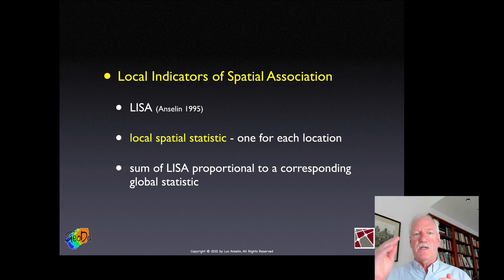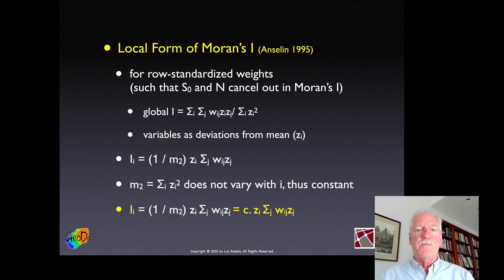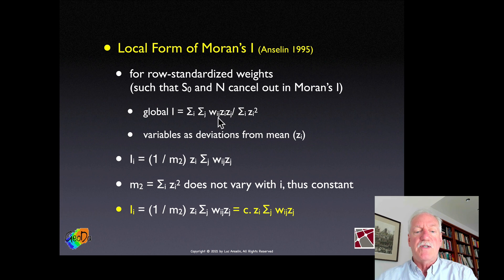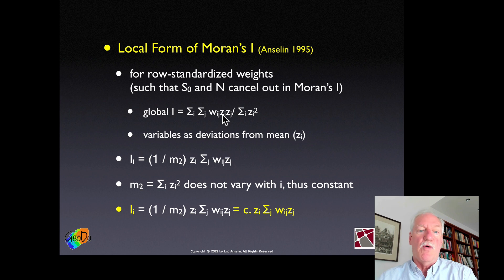The whole idea of a LISA is to decompose a global statistic into the contribution of each location. The local Moran statistic is probably the most commonly used LISA. We use row-standardized weights as a mathematical simplification. The global Moran's I is a double sum of those row-standardized weights — as opposed to the local joint counts where weights were binary — forming a cross-product statistic in deviations from the mean, or standardized values.